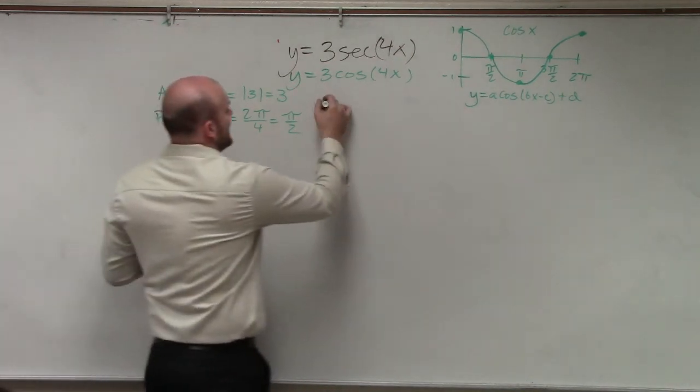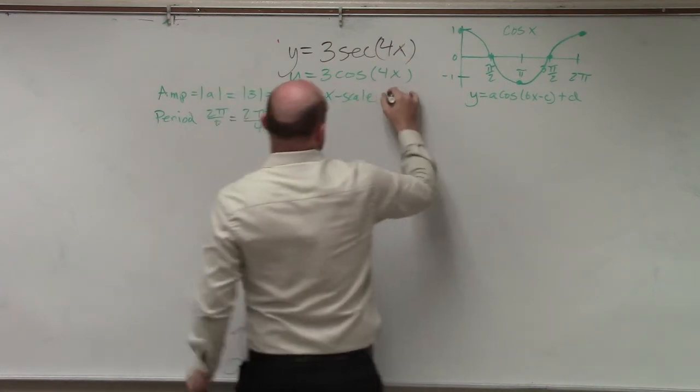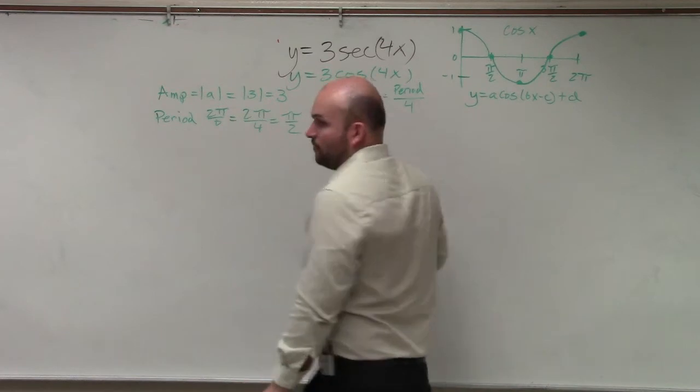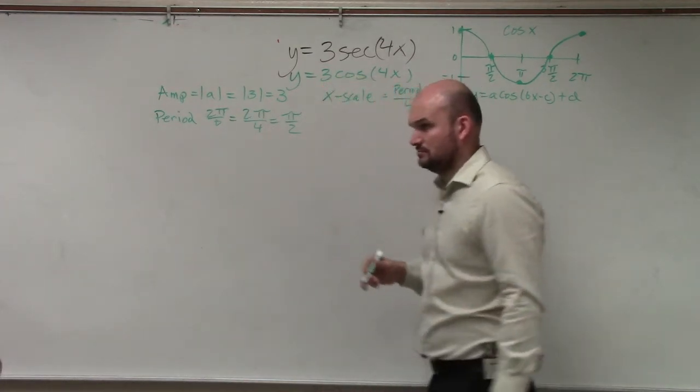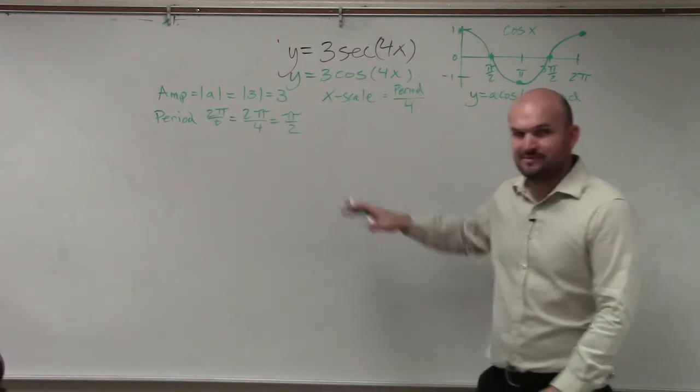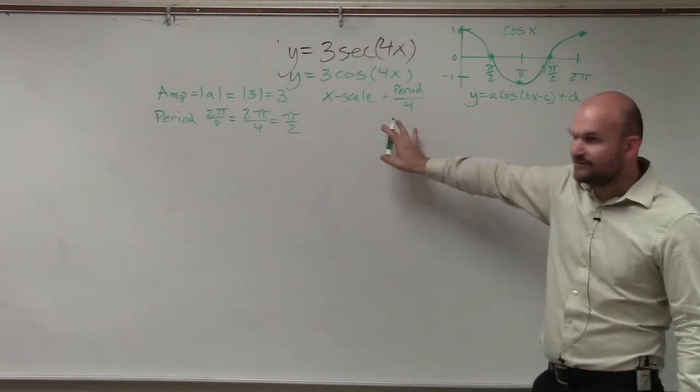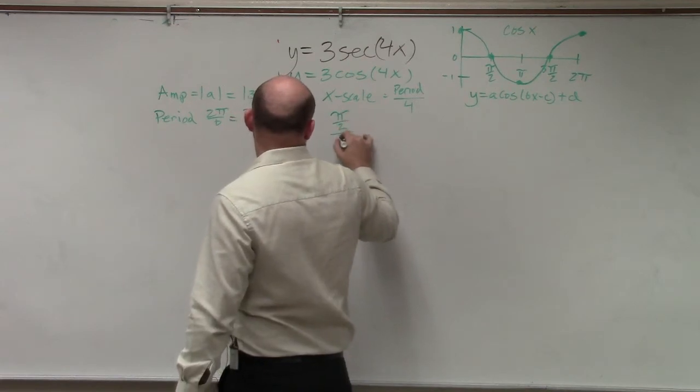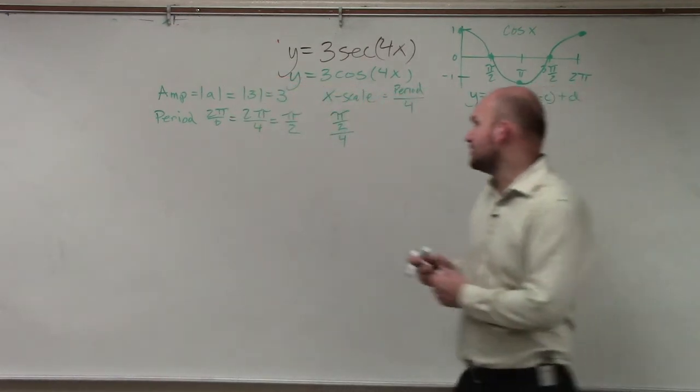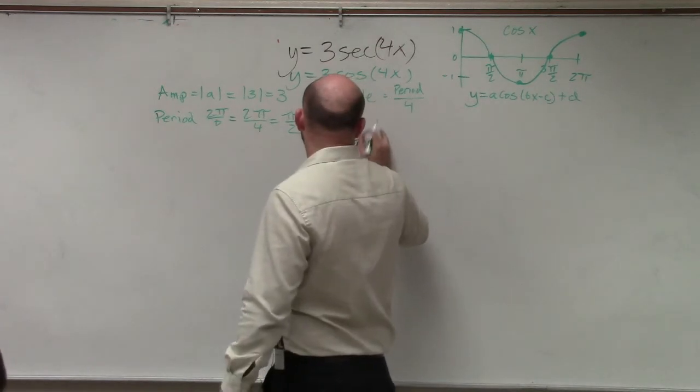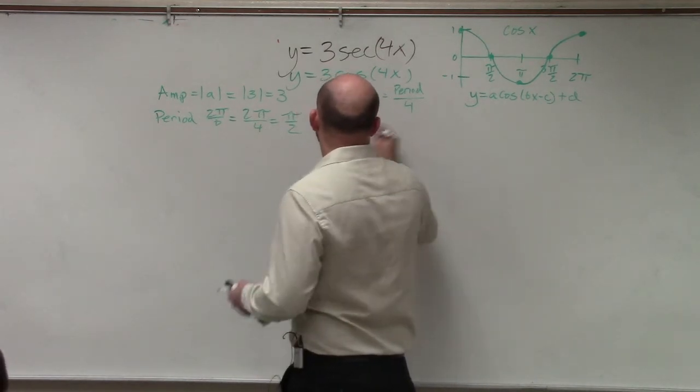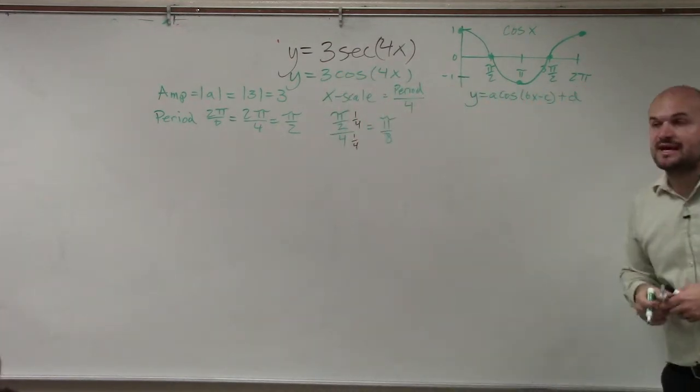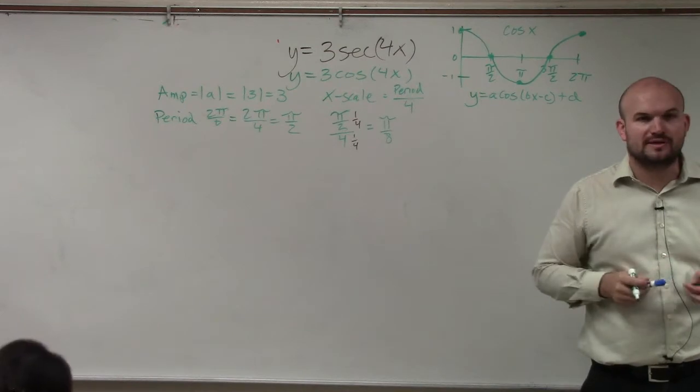The next thing is to do the x scale, which is just simply your period divided by 4. Are you writing this down? Because this is the same thing over your notes that I have already gone over with you guys. So your period divided by 4, so that's going to be π halves divided by 4. Well, to get rid of that, you're going to want to multiply by the reciprocal, which leaves me at π over 8.